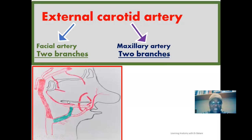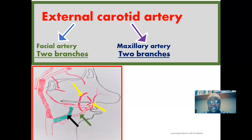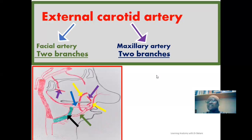This is the configuration of the nasal cavity. The external carotid artery, highlighted in gray, gives off the facial artery, which further gives off two sub-branches, both arrowed in yellow. The maxillary artery then gives off two sub-branches, highlighted in purple. Let's now look at the specific names of these arteries and the specific regions of the nasal cavity that they supply.